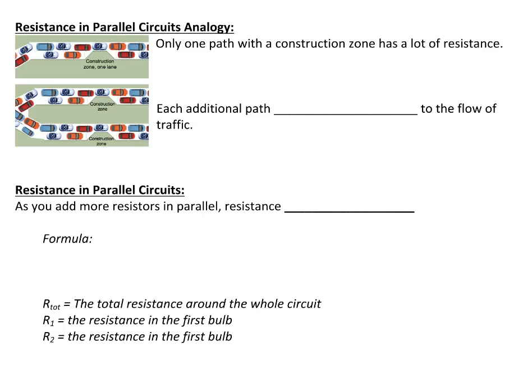Here's a nice analogy. Let's say you're trying to travel from Kingston to Oakville and there's only one path — maybe just the 401 — with one construction zone on it. That would have a fair bit of resistance. But if you add another parallel highway, say Highway 2, which also runs from Kingston to Oakville and also has a construction zone, that additional path is going to decrease the resistance to the flow of traffic, because you can now take either path. So when you add more resistors in parallel, the total resistance actually decreases.